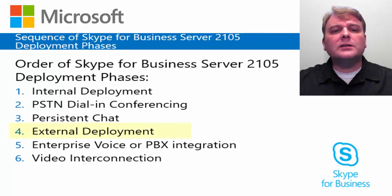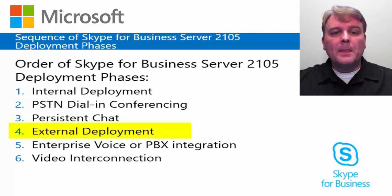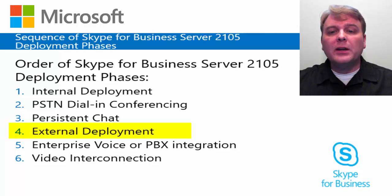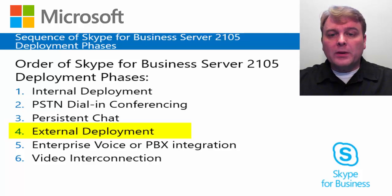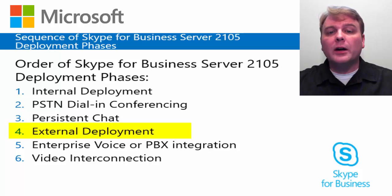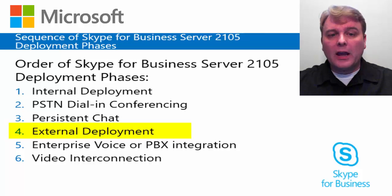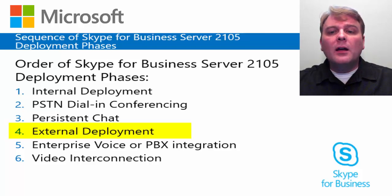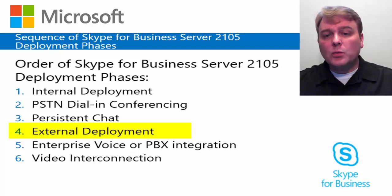Next, let's discuss external deployment. Performing the edge server deployment for external scenarios can be quite challenging, primarily because of firewall implementation issues. Because of these challenges, some organizations deploy external scenarios many months after the internal deployment has been completed and rolled out to users. With Skype for Business Server 2015, the planning and deployment of edge scenarios has been simplified and this will probably change this timeframe considerably.